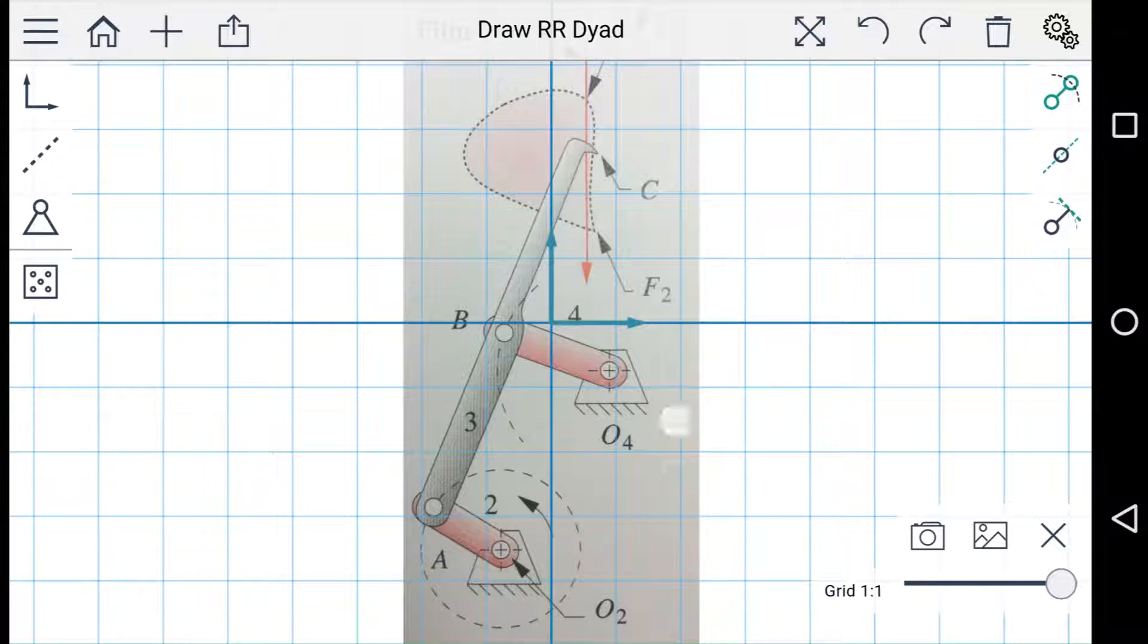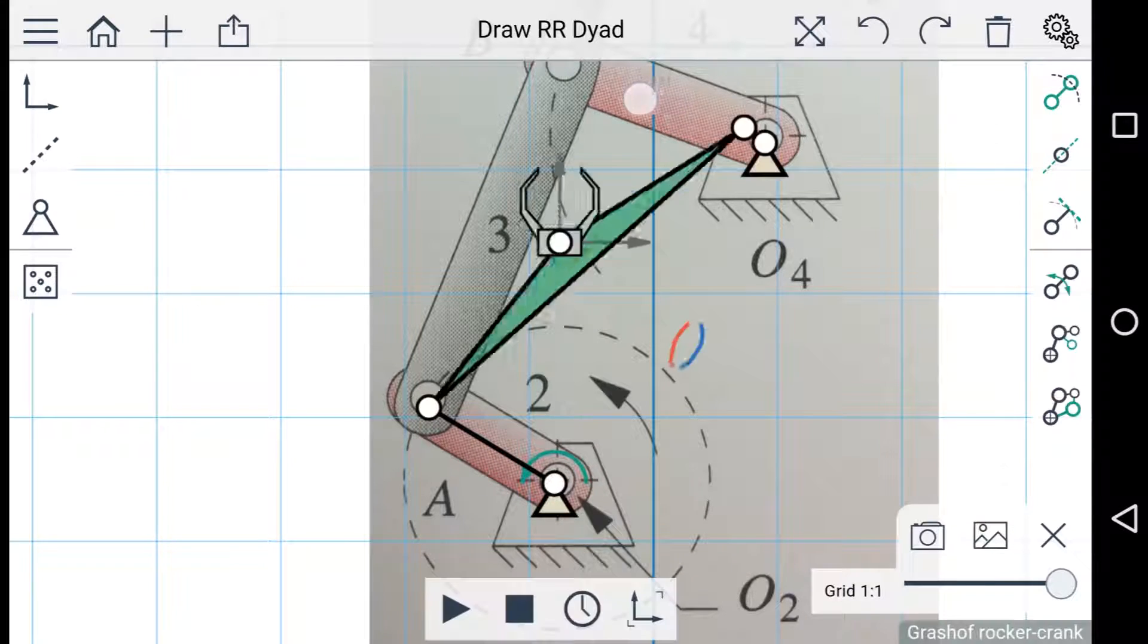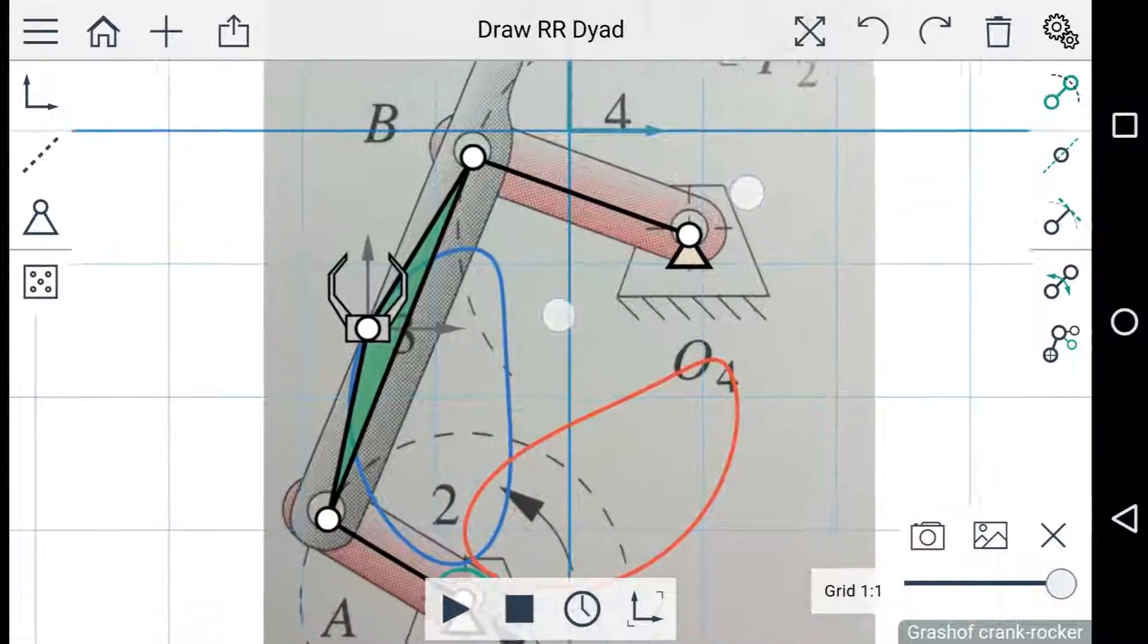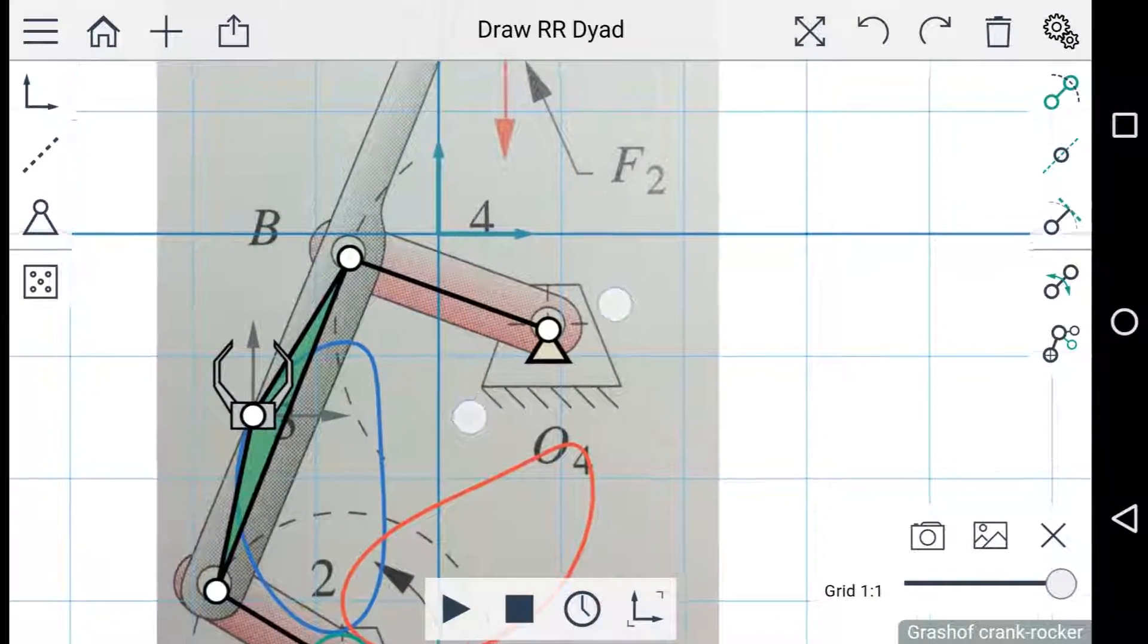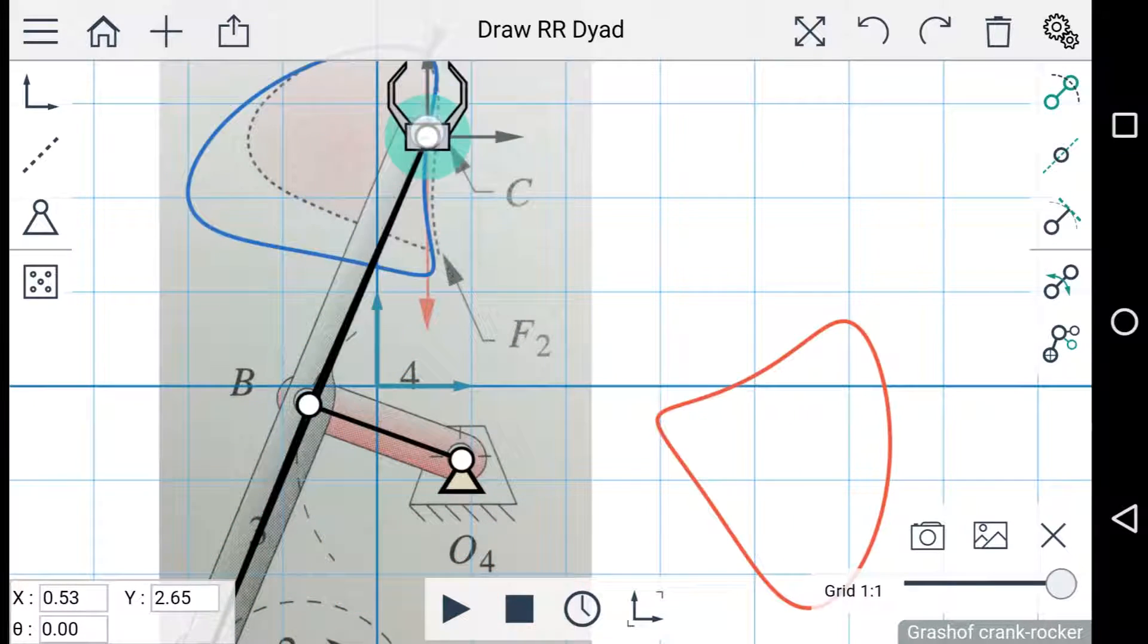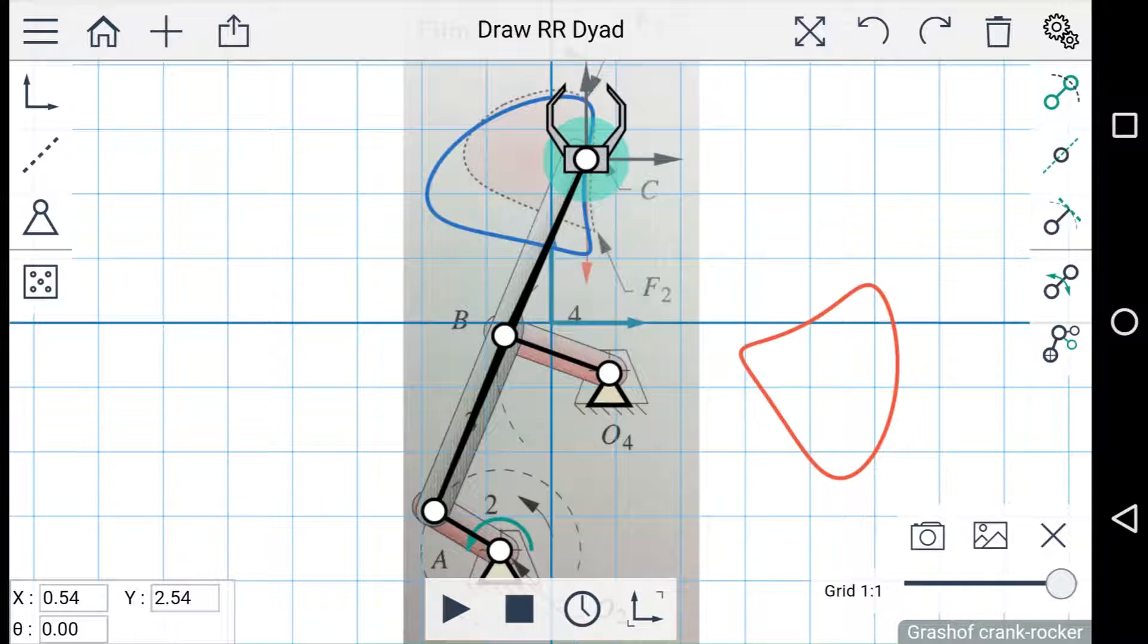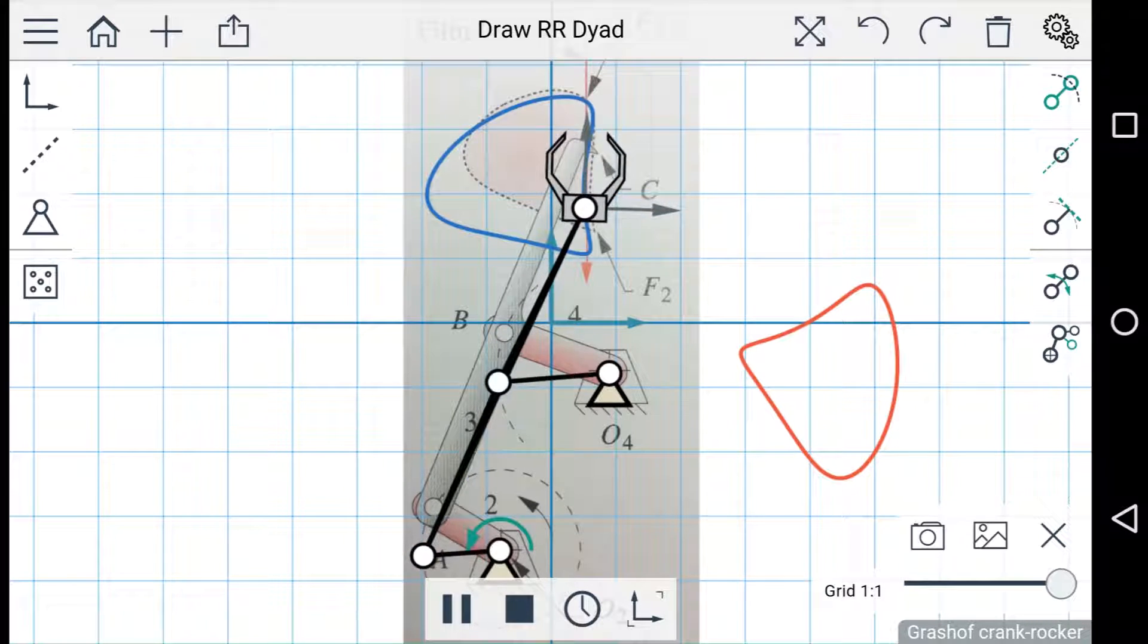So let's zoom in here and draw the first dyad. And the second dyad. And let's move the end effector out to the hook here. And now that we've recreated this mechanism, we can press play and see what it does.